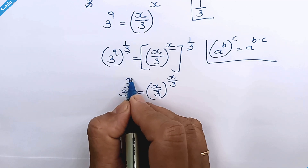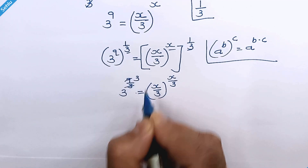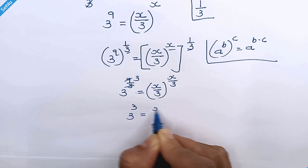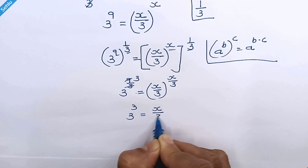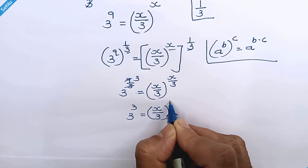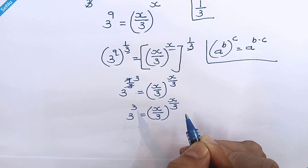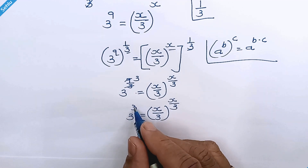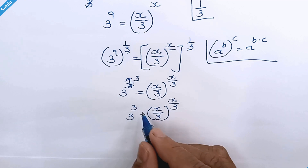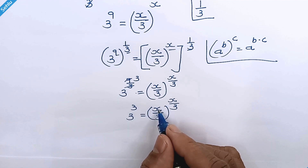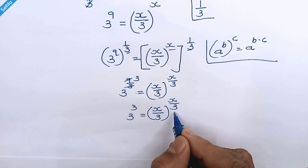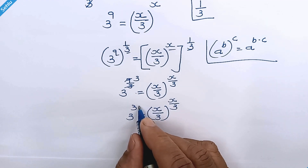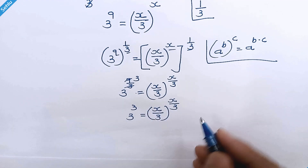Since 9 divided by 3 is 3, it will be 3 raised to 3 is equal to x over 3, whole raised to x over 3. Here we have x over 3 as both the base and the exponent on the right side, so we can equate power to power or base to base.